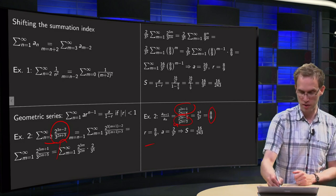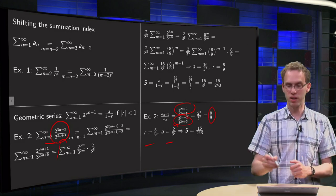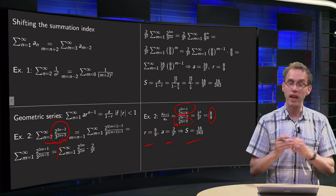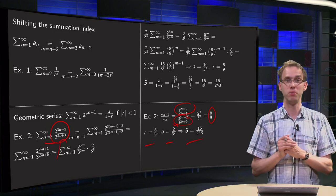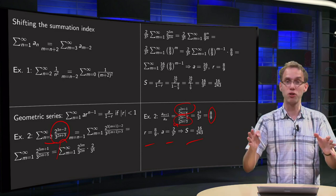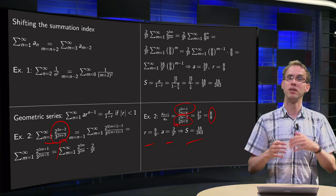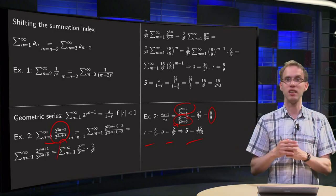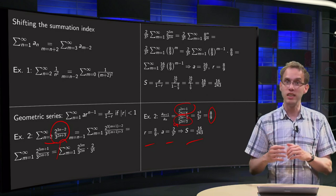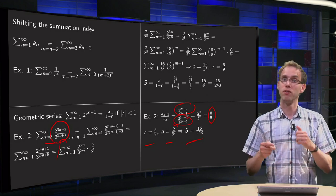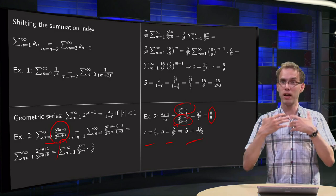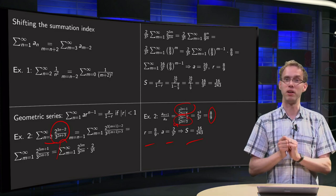So we have our r and our a, and we can write down the sum immediately. If you have a geometric series, you can do two things: rewrite it completely into standard form, which is usually more work, or simply find the first term, find the ratio, and apply the formula straight away.